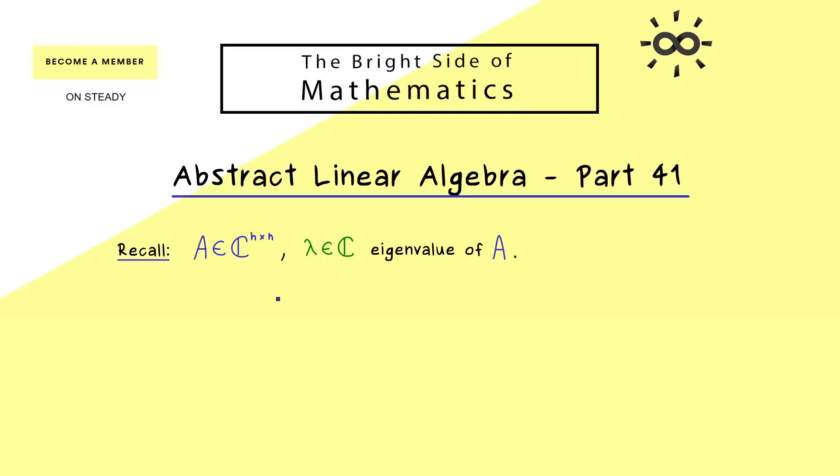The setup is always the same, we fix a square matrix A and an eigenvalue lambda. Then we can form a new matrix N where we just shift this eigenvalue.